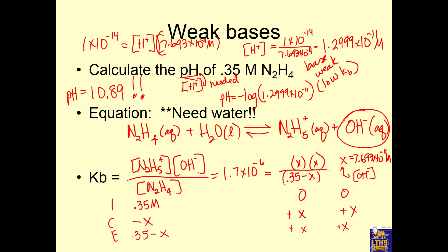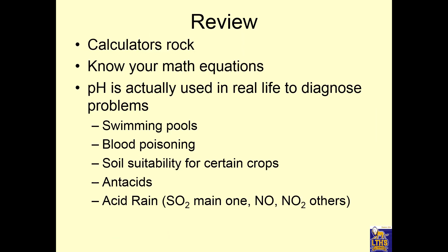It's greater than 7, so it's a base — which makes sense because N₂H₄ is a base and it made hydroxide ion, so there's more hydroxide than hydrogen. We brought it all together: equilibrium, pH, acids, bases, Ks. You've got to know how to use your calculators and your math equations.